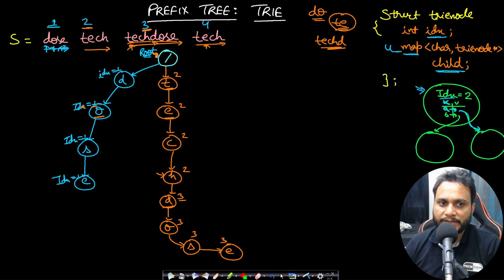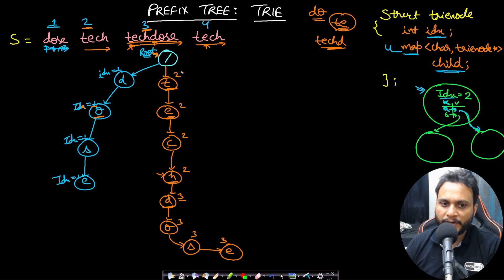Once this insertion is done, let's insert the last 'tech.' I can just flow through 't,' 'e,' 'c,' 'h' — all of these are already inserted, so no new node will be made and therefore there will be no change to the index value.